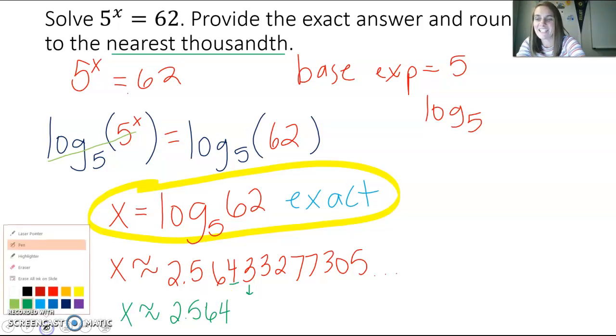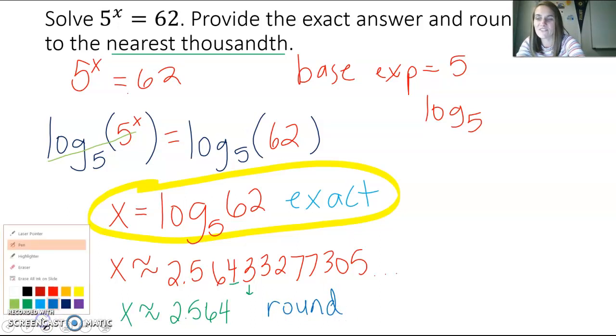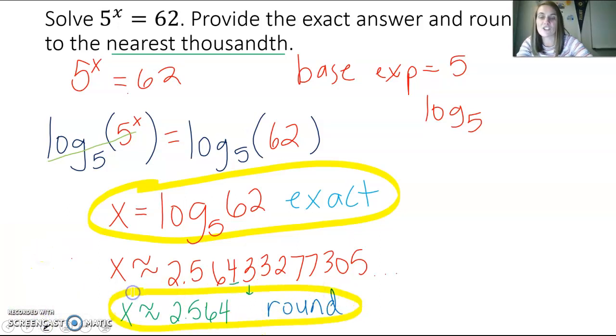And then that answer is the rounded answer. So two answers for this problem are exact answer of log base 5 of 62, and our rounded answer of 2.564.